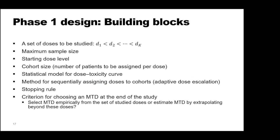This slide shows some important considerations or building blocks for developing a phase one trial design. We need a set of doses to be studied, D1 up to Dk; a maximum sample size predetermined based on budgetary and statistical considerations; a starting dose level, usually the lowest dose; the cohort size or number of patients to be assigned per dose; the statistical model for the dose-toxicity curve; the method for sequential assignment of doses to cohorts — the adaptive dose escalation rule; the stopping rule; and the criterion for choosing an MTD at the end of the study, which may include selecting an MTD empirically based on the set of study doses, or estimating the MTD by extrapolating beyond the doses studied.